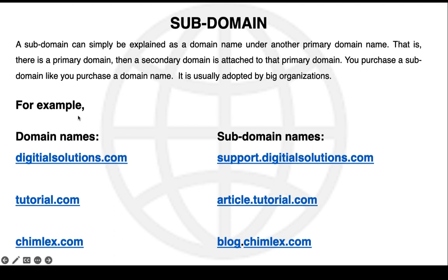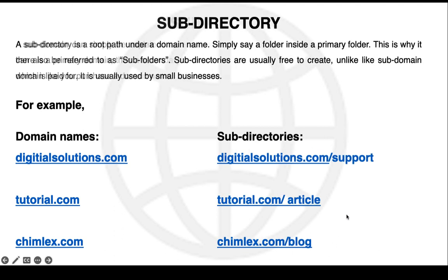Here are some examples: for a domain name like digitalsolutions.com, a subdomain could be support.digitalsolutions.com. For tutorial.com, the subdomain could be article.tutorial.com. And for shimlex.com, you can have a subdomain like blog.shimlex.com. Now let's look at a subdirectory.